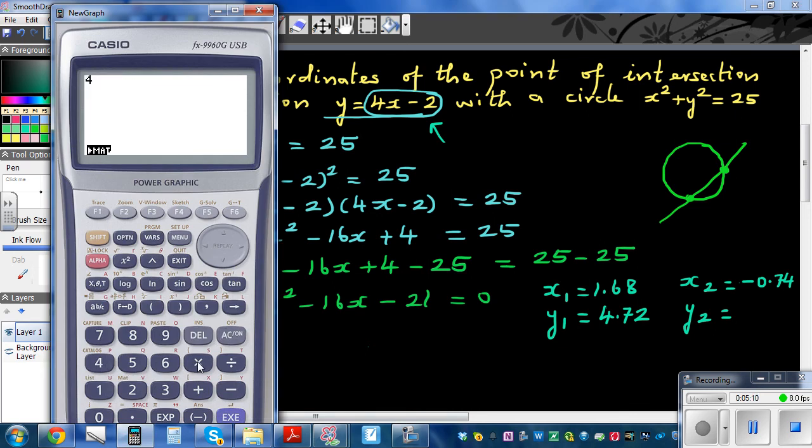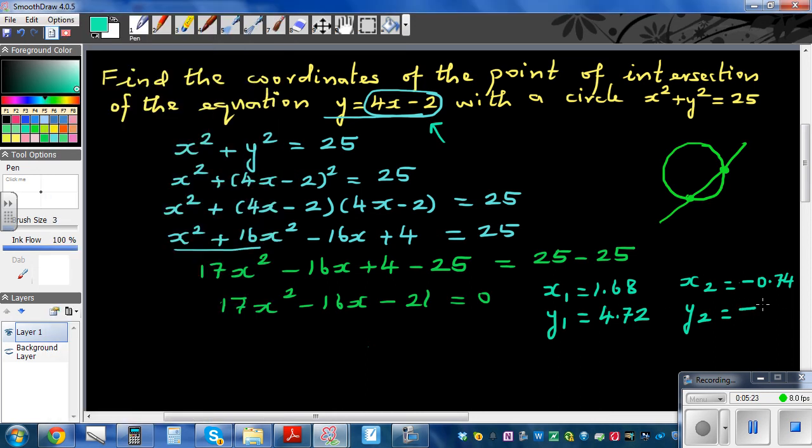And to find the second coordinate, the same: 4 times -0.74 take away 2 is -4.96. So what we are saying is this coordinate is probably this is your x₂, y₂ and this is your x₁, y₁. Whichever way you say it doesn't matter.